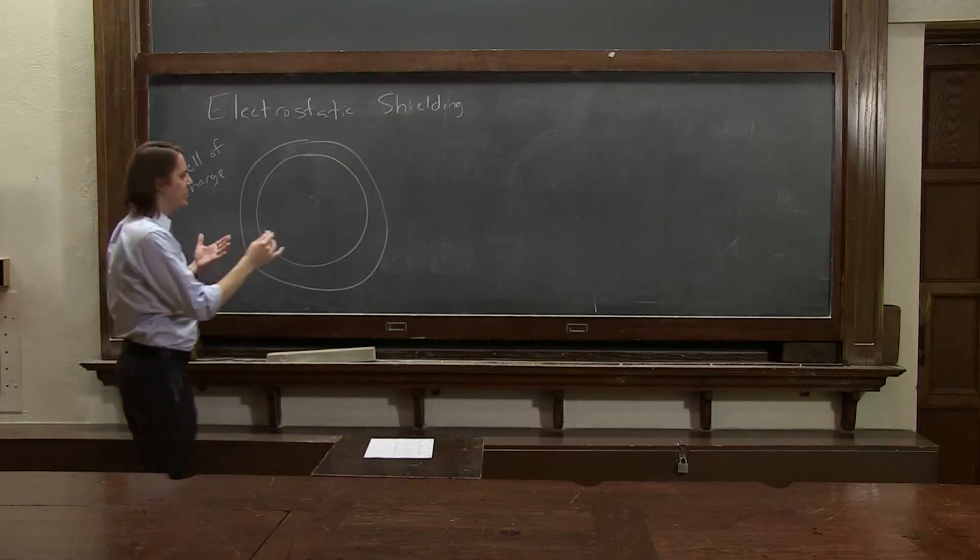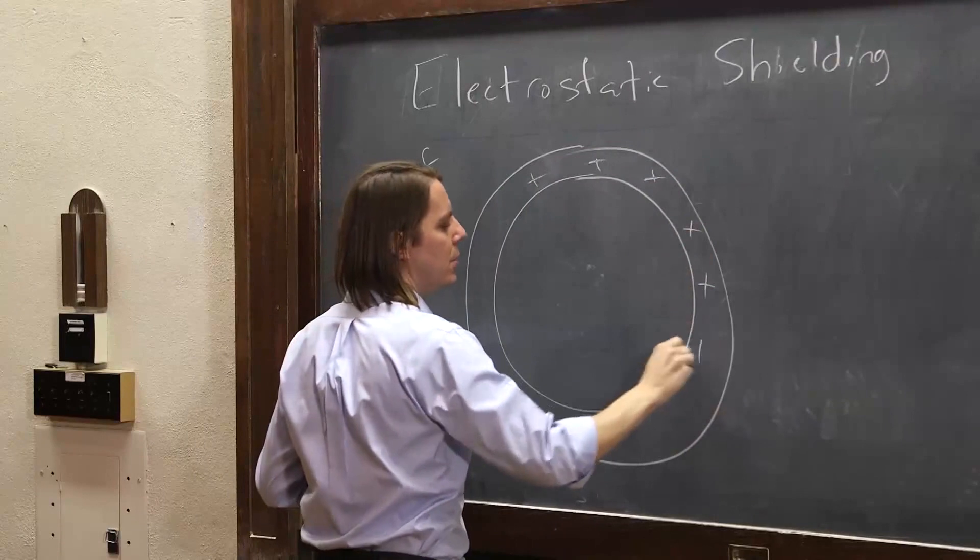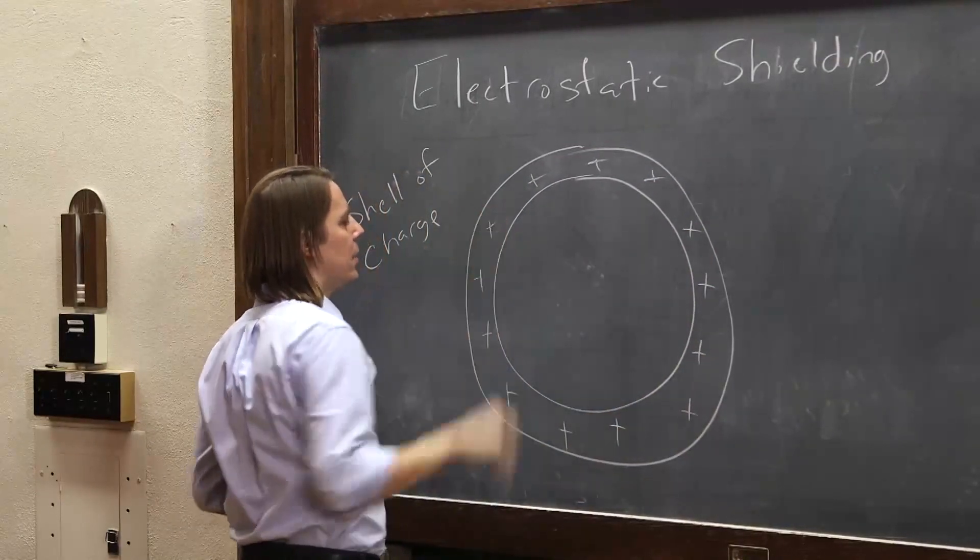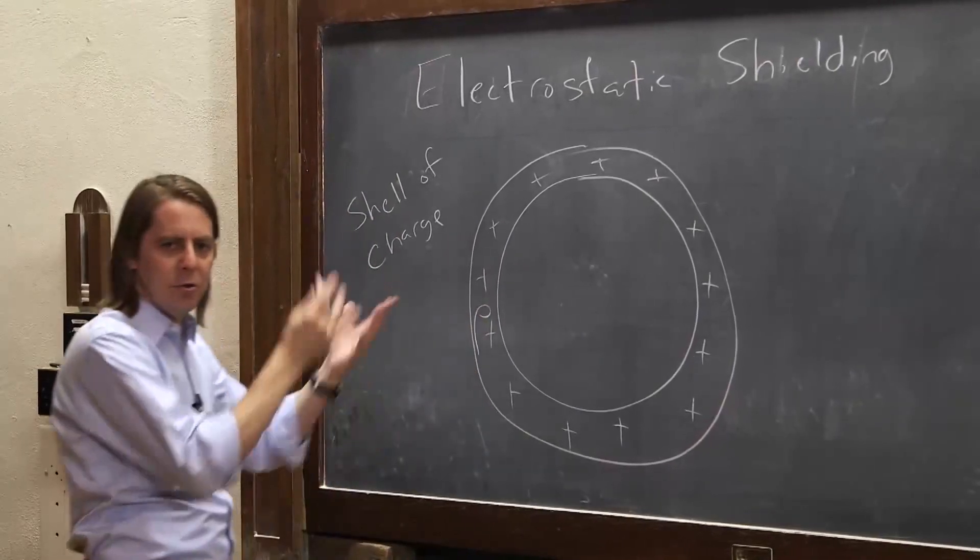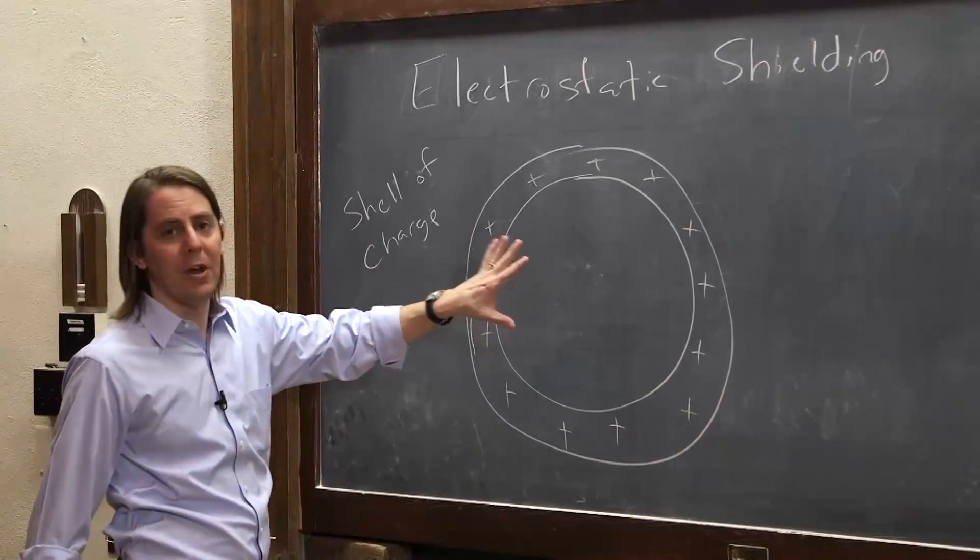So this is really a three-dimensional shell, and there are charges throughout this region. And they have some charge density rho in this volume of this shell. And the question is, will that keep an electric field out?